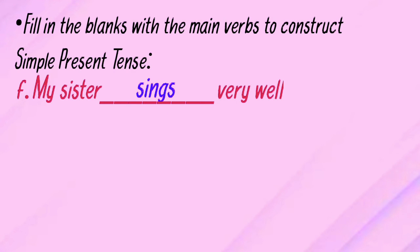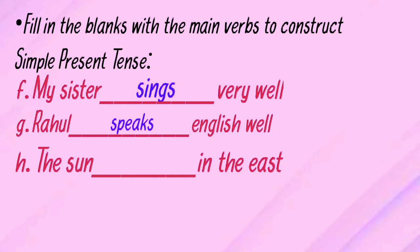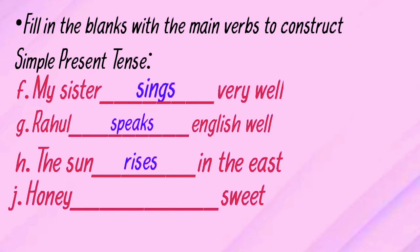Note that the answer for 'my sister' could also be 'cooks,' 'draws,' or similar — the main verb must be in present tense. Next: Rahul ___ English well — the answer is 'speaks.' The sun ___ in the east — the answer is 'rises.' Honey ___ sweet — the answer is 'tastes.'